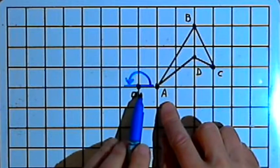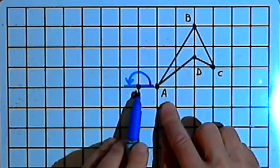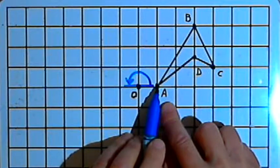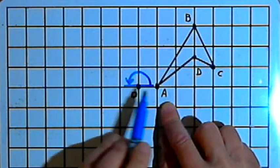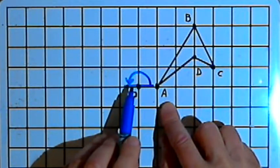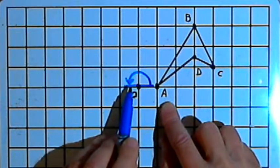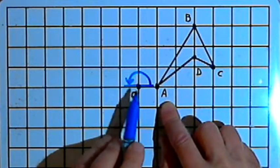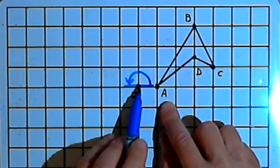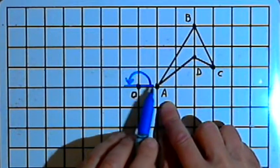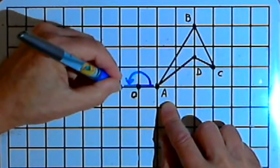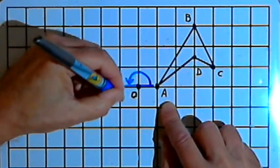Starting at point O and going to point A, I go one unit to the right. With an angle of rotation of 180 degrees, we reverse all the directions. So instead of going one unit to the right, I'm going to go one unit to the left, and that will get me to point A prime.